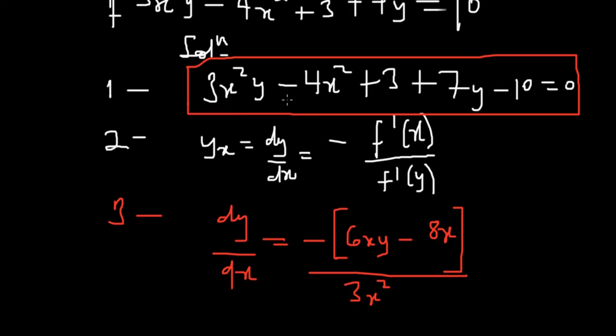This goes to 0 because it doesn't have any y attached to it. This one will also go to 0. Then partially differentiate 7y which gives us positive 7, and this goes to 0 because it doesn't have any y attached to it.